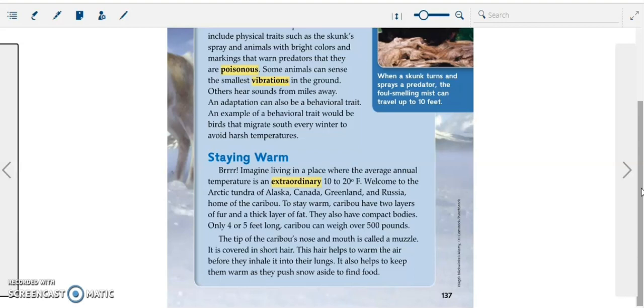To stay warm, caribou have two layers of fur and a thick layer of fat. They also have compact bodies. Only four or five feet long, caribou can weigh over 500 pounds. The tip of the caribou's nose and mouth is called a muzzle. It is covered in short hair. This hair helps to warm the air before they inhale it into the lungs. It also helps to keep them warm as they push snow aside to find food.